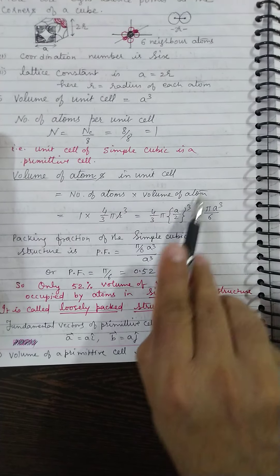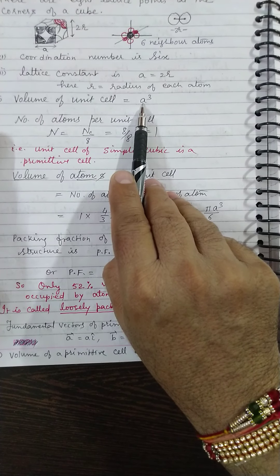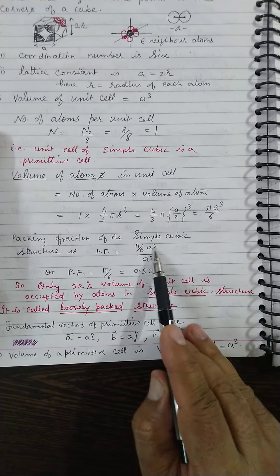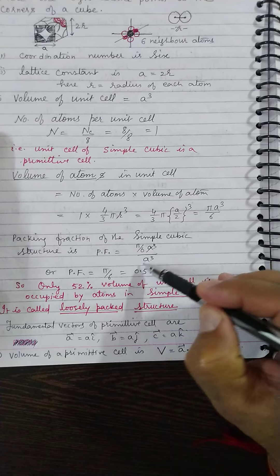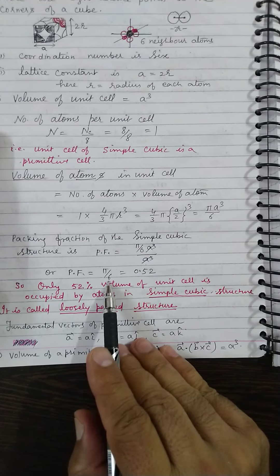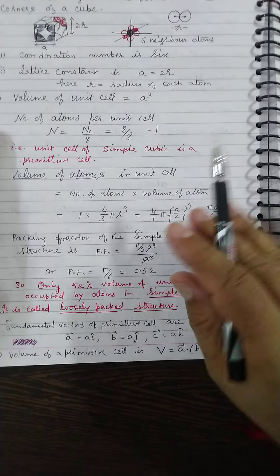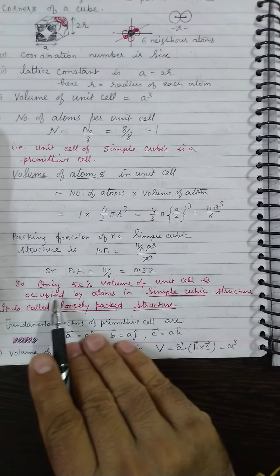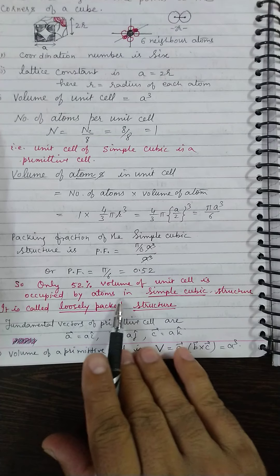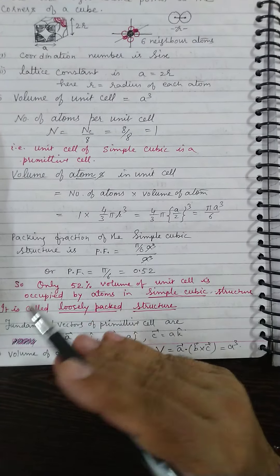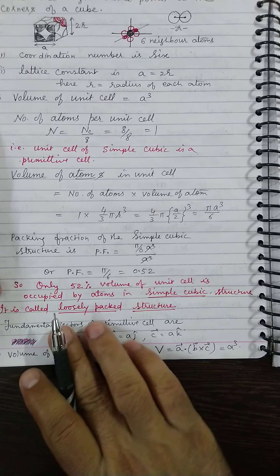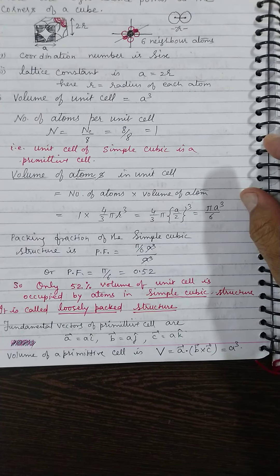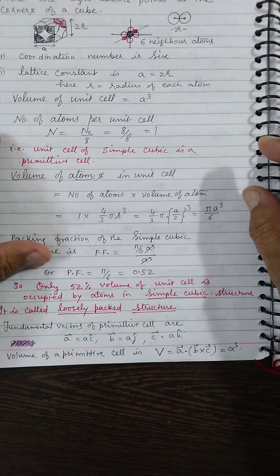As I told you in the beginning, packing fraction will be this ratio divided by the volume of unit cell. So it comes out to be π/6 A³ / A³. You can cancel these values and get π/6 as the packing fraction, that is only 0.52 or 52 percent. Simple cubic structure is a loosely packed structure—only 52 percent of the unit cell volume is occupied by atoms, and the rest 48 percent is vacant.